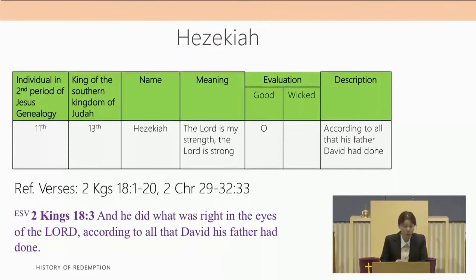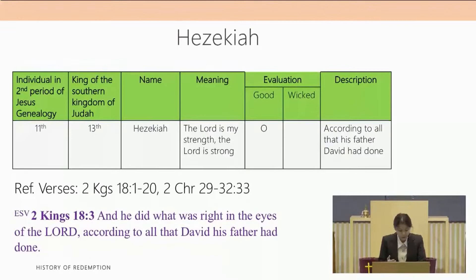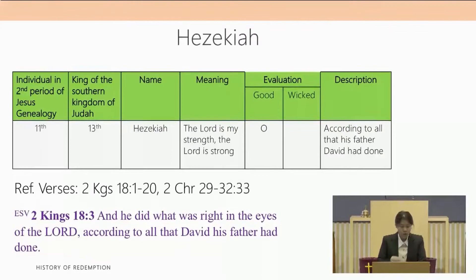The eleventh individual in the second period of Jesus' genealogy is King Hezekiah, the thirteenth king of the southern kingdom of Judah. The name Hezekiah means the Lord is my strength, the Lord is strong. He is evaluated as a good king. 2 Kings 18 verse 3 says he did what was right in the eyes of the Lord according to all that David his father had done. When the Bible says a king followed all that David had done, this shows he is really a very good king — David being the quintessential good king. The Bible devotes the most writing to King Hezekiah among all the kings of Judah and Israel, showing how much God favors him.